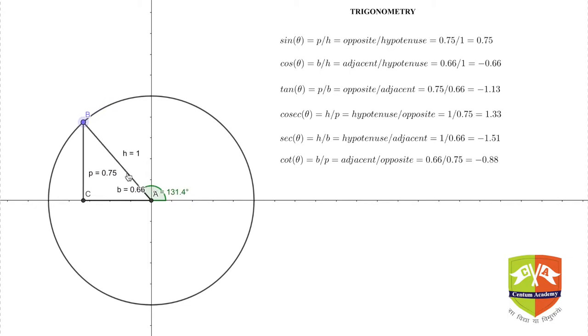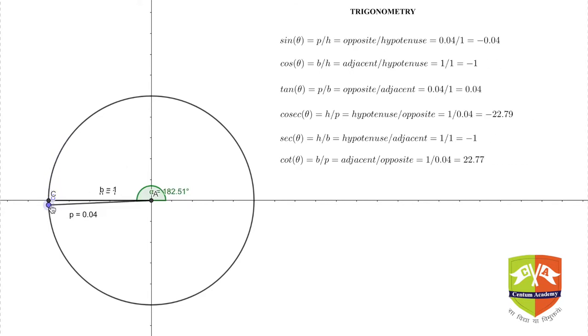Why? Because if you notice, point C is in the negative x-axis, so base is negative. Point B is still in the positive y-axis, so the y-coordinate of point B, this line BC, is still positive, so hence sine is positive.